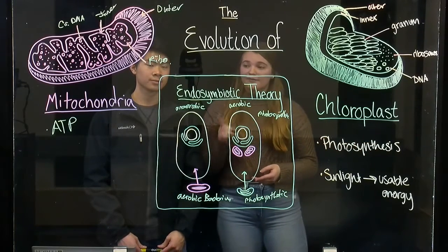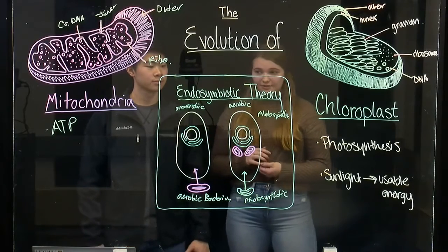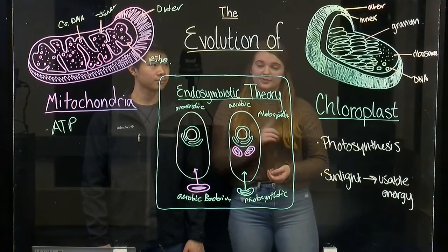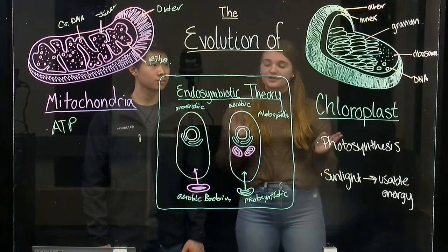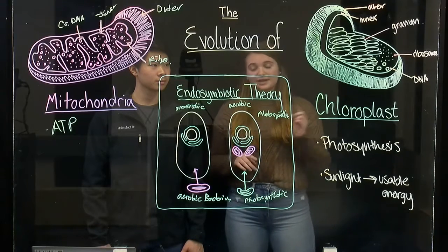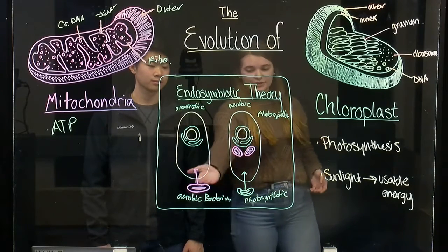Secondly, if a mitochondria or chloroplast is depleted inside the host cell, the cell cannot remake them, suggesting that both these organelles likely evolved independently outside of the host cell.